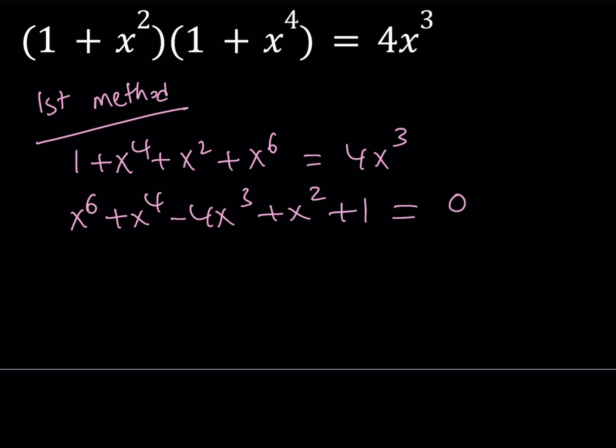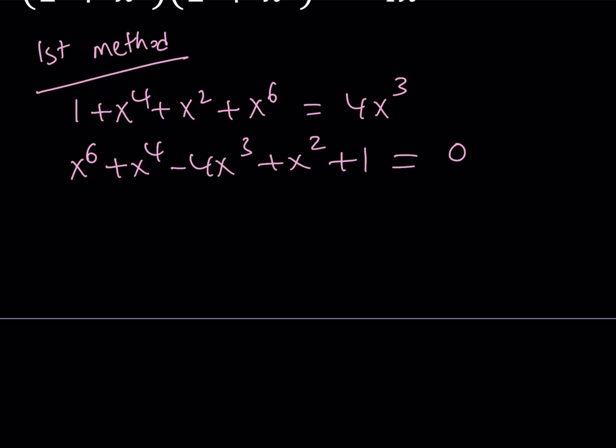So we can write it as x to the 6th power plus x to the 4th minus 4x cubed plus x squared plus 1 equals 0. Now, this equation has 6 degree. I'm going to arrange these terms so that I can use some perfect squares. In other words, I'm going to be completing the square. For that purpose, and the reason why I think about completing the square is because I do have x to the 6th and then I have x to the 3rd. So I can hopefully make something out of that. And to complete the square, I'm going to separate 2x cubed here.